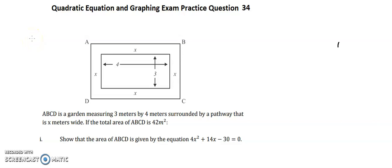Quadratic equation and graphing exam practice question 34. ABCD is a garden measuring 3 meters by 4 meters surrounded by a pathway that is x meters wide.